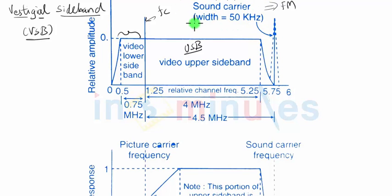The carrier frequency which is modulated by sound signal is at the end of the upper sideband that we have of the video signal.